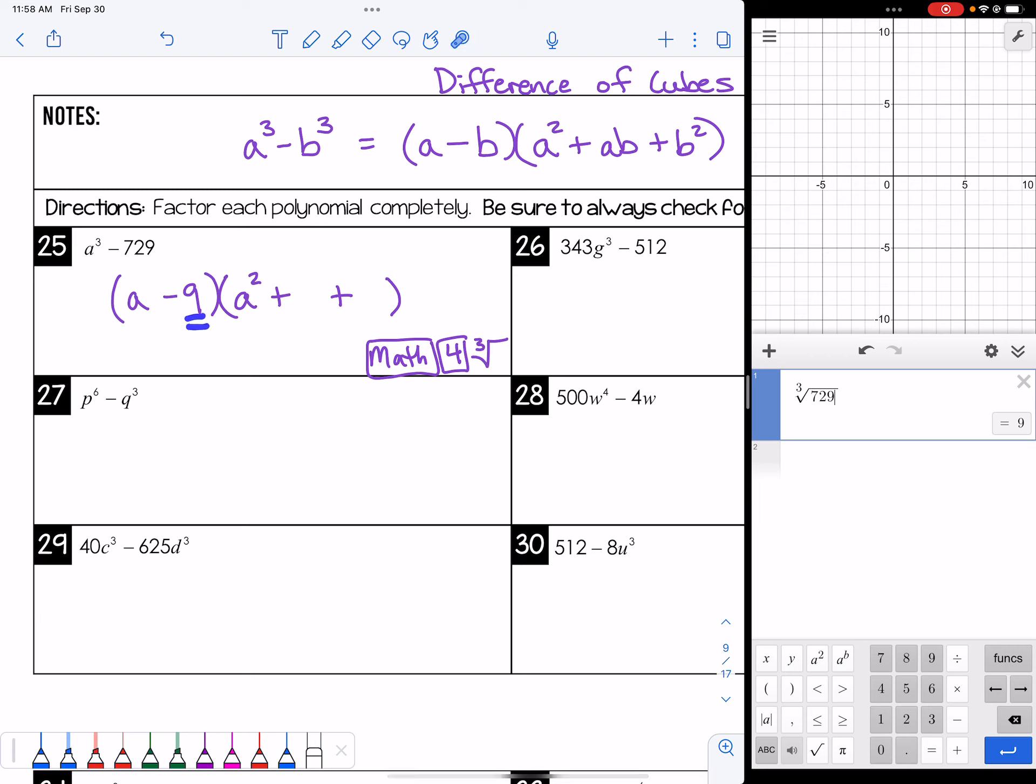Square the last term in the binomial to get the last term in the trinomial, so that'll be 81. Then multiply these two together and put them in the middle. But don't worry about the sign, because you've already put that in place. Alright, so that's it for that one.